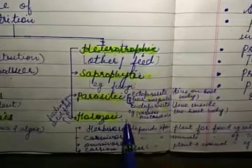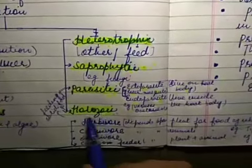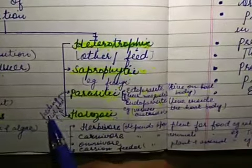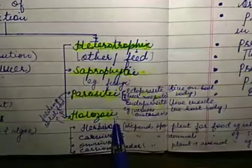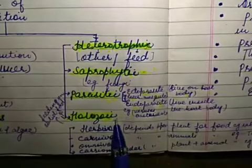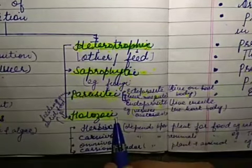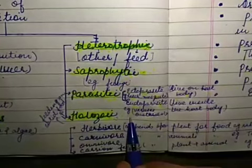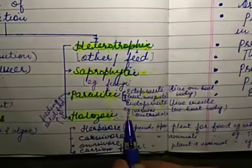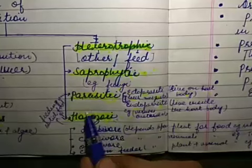Next, holozoic mode of nutrition. What is the meaning of this term holozoic? It means feeding on solid food and this is completed in five steps. First step of holozoic mode of nutrition: that is ingestion, second digestion, third absorption, fourth assimilation, and fifth one is egestion. So this topic we have to discuss in detail.